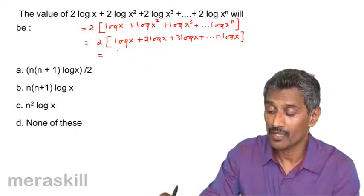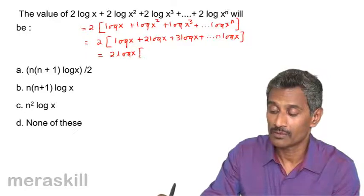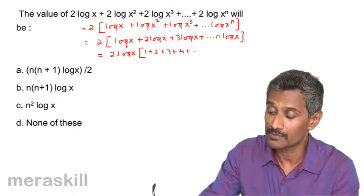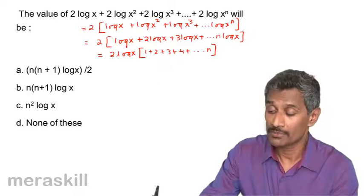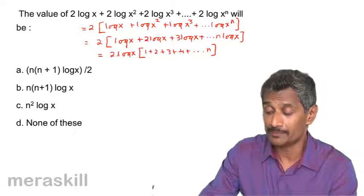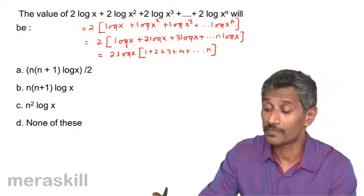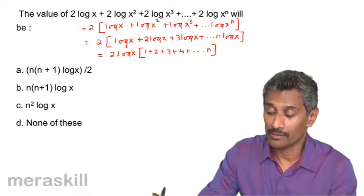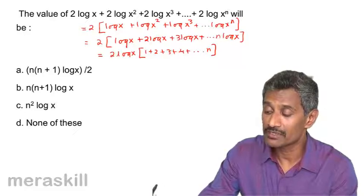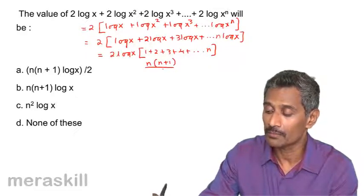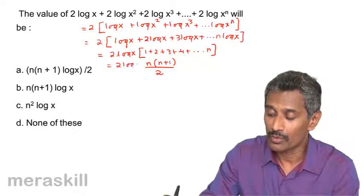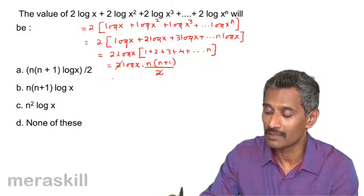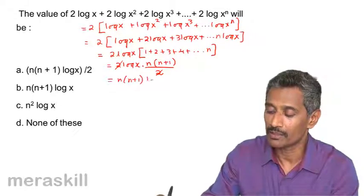We can take log x as a common factor. What remains inside is 1 + 2 + 3 + ... + n. This is the sum of the first n natural numbers. Using the arithmetic progression formula with first term 1 and common difference 1, the sum is n(n+1)/2. So we have 2·log x × n(n+1)/2; the 2 cancels, leaving n(n+1)·log x.